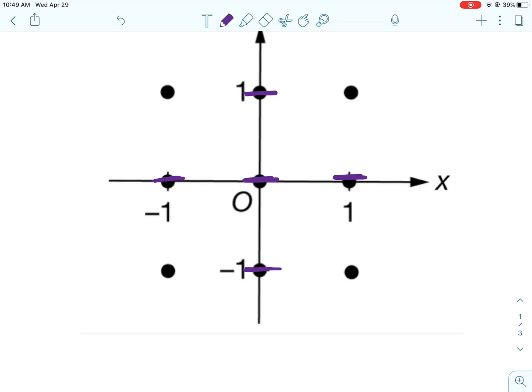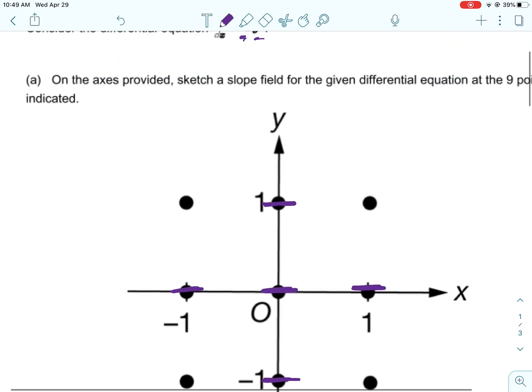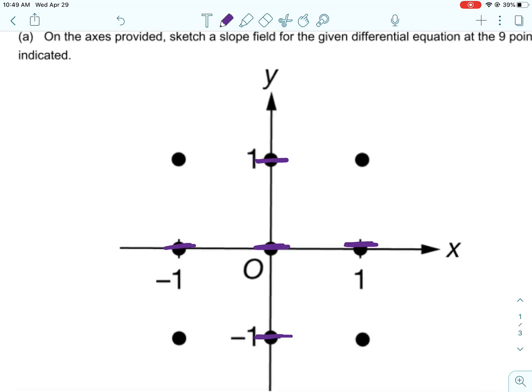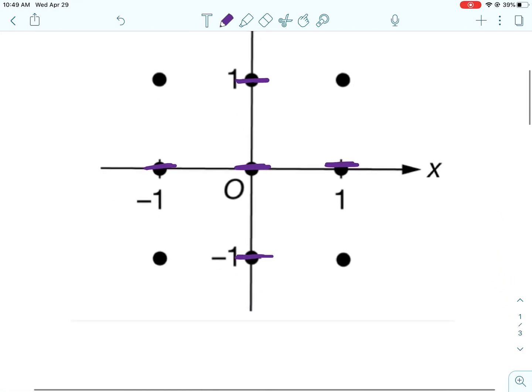So this is multiplying the x and y cubed. If x or y are zero, then I know my slope is zero. So I'm going to go ahead and just take care of all of those slopes. I know on the axes, the x and y axis, that I have zero slopes. So I just draw little horizontal slopes.